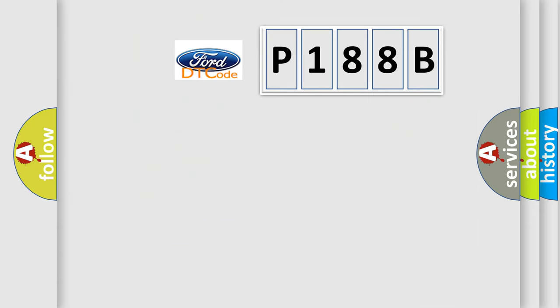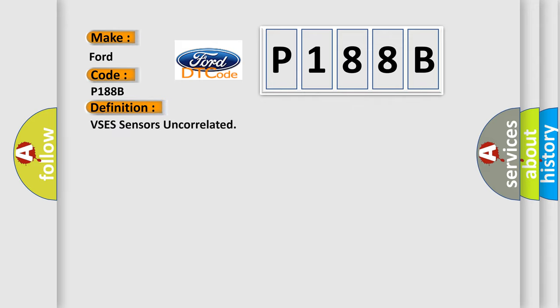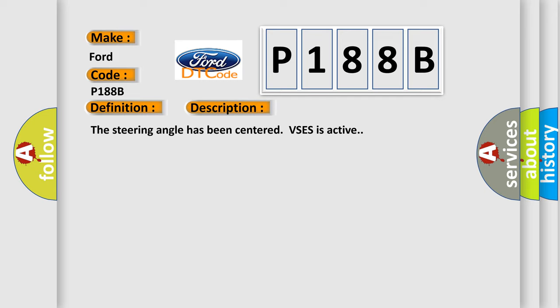The number itself does not make sense to us if we cannot assign information about what it actually expresses. So, what does the diagnostic trouble code P188B mean? The basic definition is VSEs sensors uncorrelated. And now this is a short description of this DTC code: the steering angle has been centered, VSEs is active.